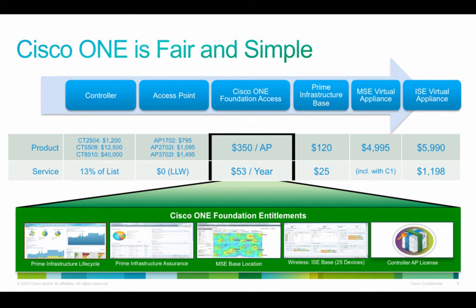Cisco One, as an offering to customers, is the most fair and the most simple that we've had in anything we've had in the past. You start with the wireless LAN controller — you pick the controller that best meets your needs and that controller is devoid of licenses or any kind of software. You're simply just getting the hardware, and for service you simply pay for the service on the hardware.